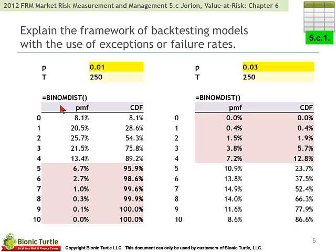This backtest in Jorion is essentially an application of a binomial distribution — which in part two is just a series of independent Bernoullis — such that if the probability is 1% under an accurate model, corresponding to a 99% VAR, the binomial distribution tells us that the probability we would observe five exceedances over 250 days is given by the binomial distribution. Under the PMF it's 6.7%. We can also express this cumulatively, such that if the VAR model is accurate, it becomes less and less likely that we observe higher numbers of exceptions — losses in excess of the VAR — and depending on the confidence level we choose, we can reject the null and decide the model is bad, but we still risk making a type one error.